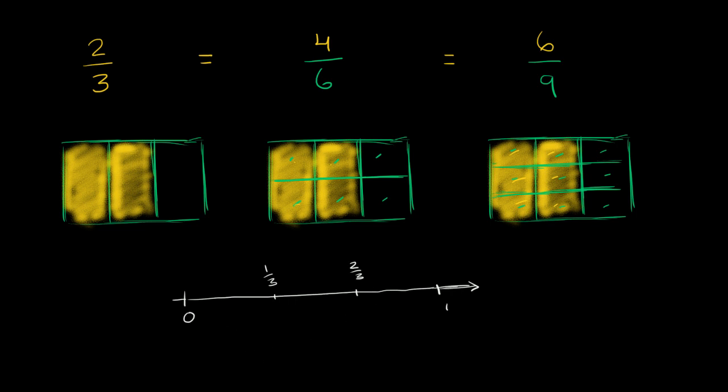Now what would 4 sixths be? Well now we would just have to divide this into six equal spaces. So 1, 2, 3, 4, 5, 6. And 4 sixths, that would be four out of the six spaces on the way to one. So 1, 2, 3, 4. So this number is also equal to 4 sixths.